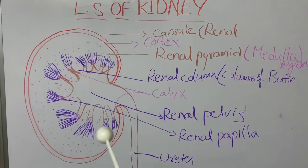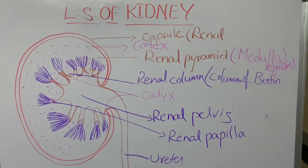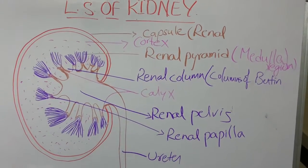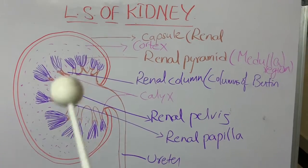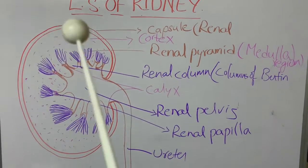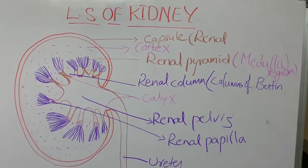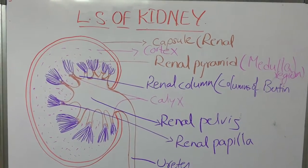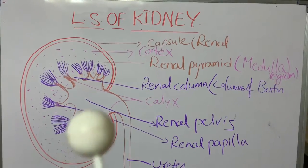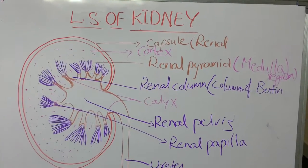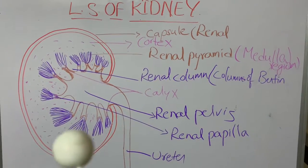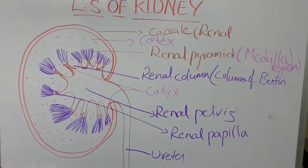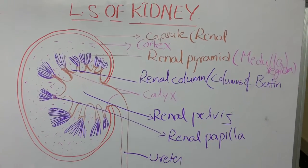The medulla region is somewhat pale red in color because more capillaries are present in the cortical region. In the cortex, nephrons, glomerulus, PCT, and DCT are present. The Henle's loop and collecting ducts are present in the medulla region. That is why the cortical region is dark red in color.